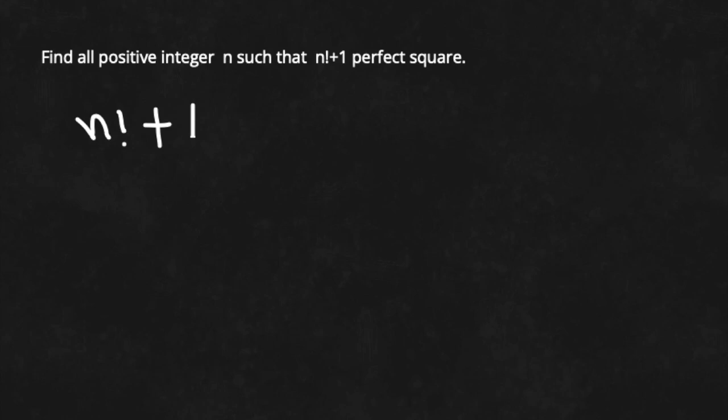Assalamu Alaikum. Welcome to another fact square. So we need to find a value of n such that when we add 1 into its factorial, we get a perfect square. So let's start the solution.